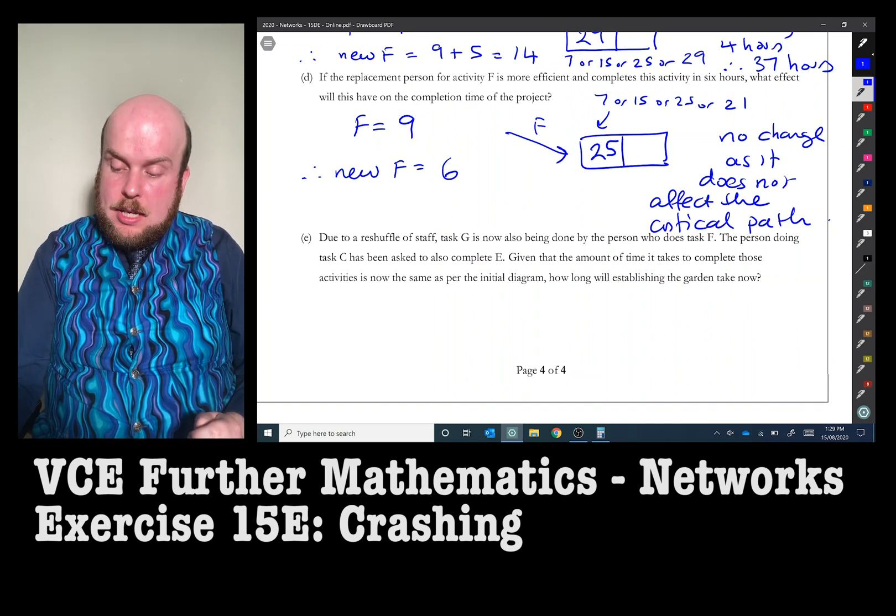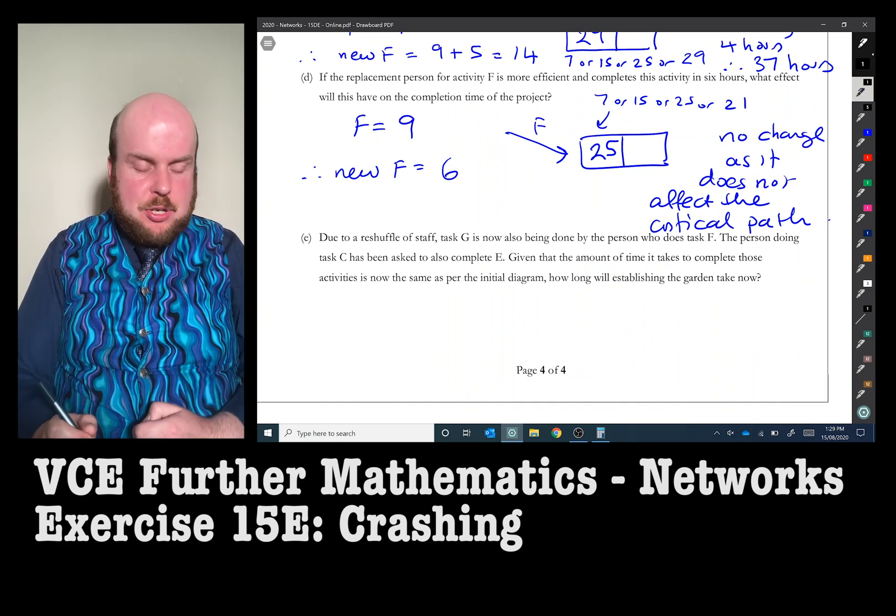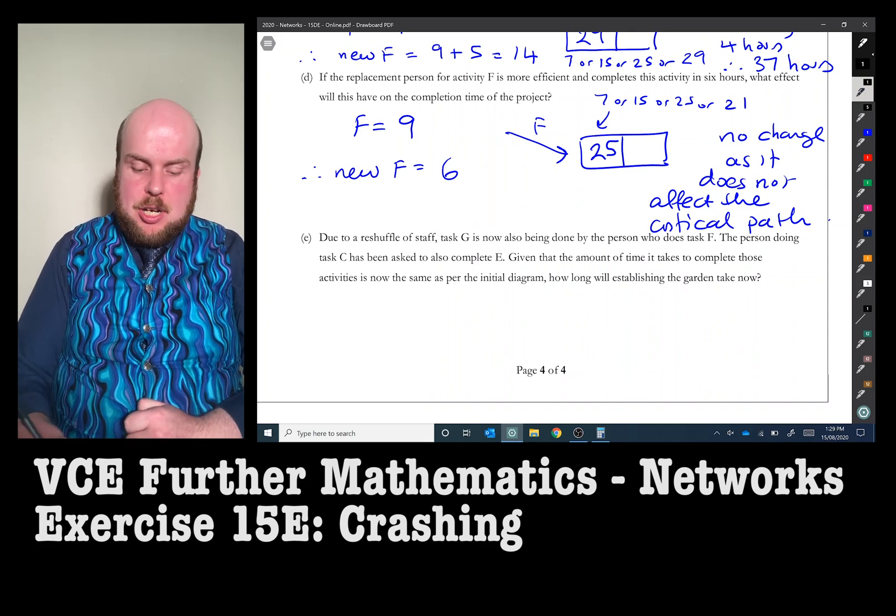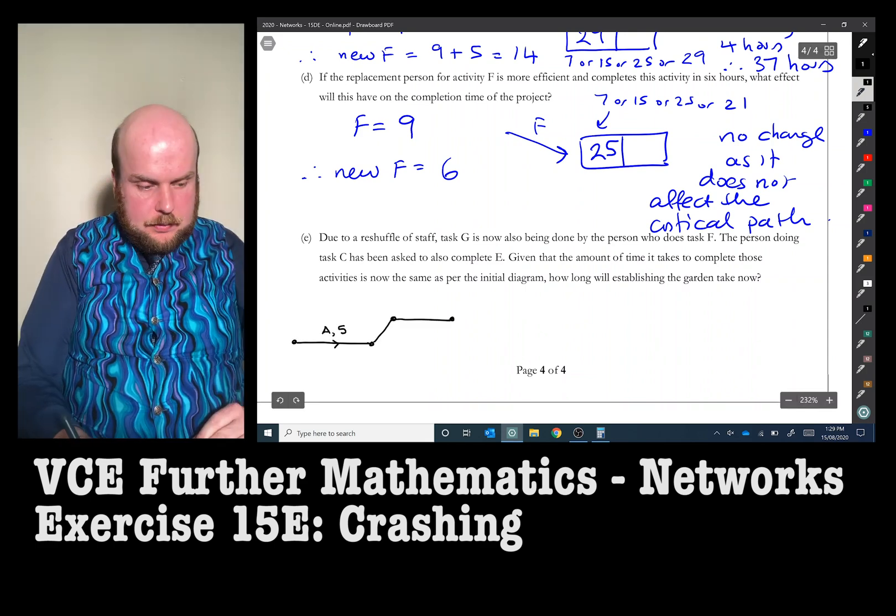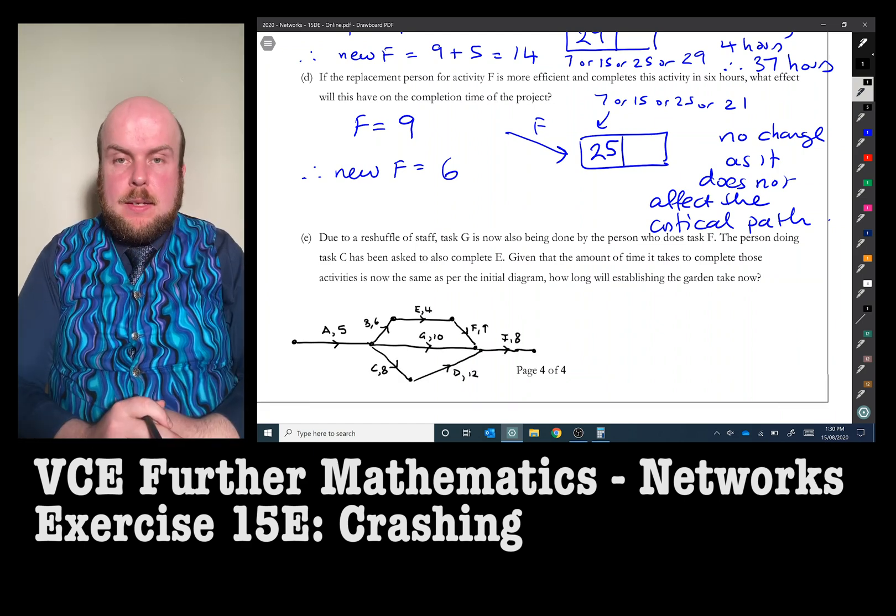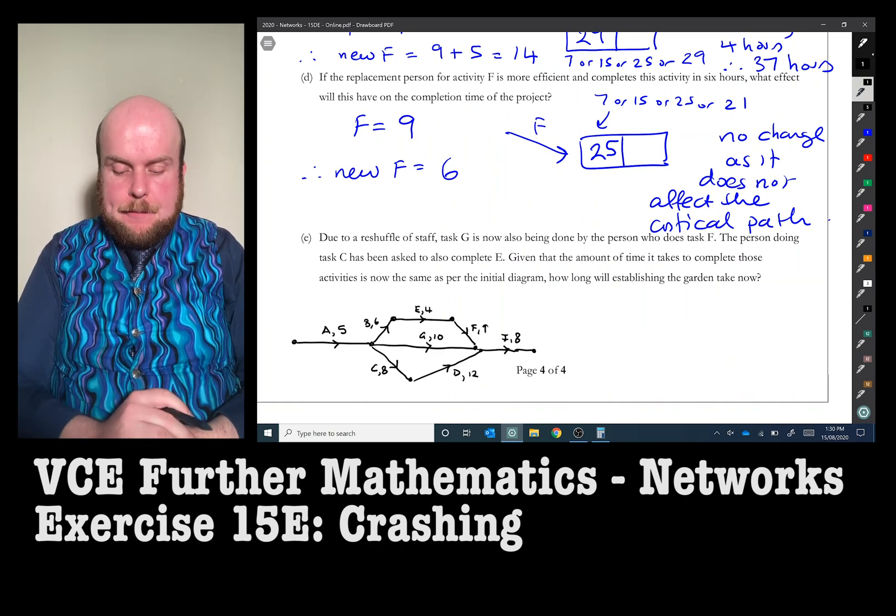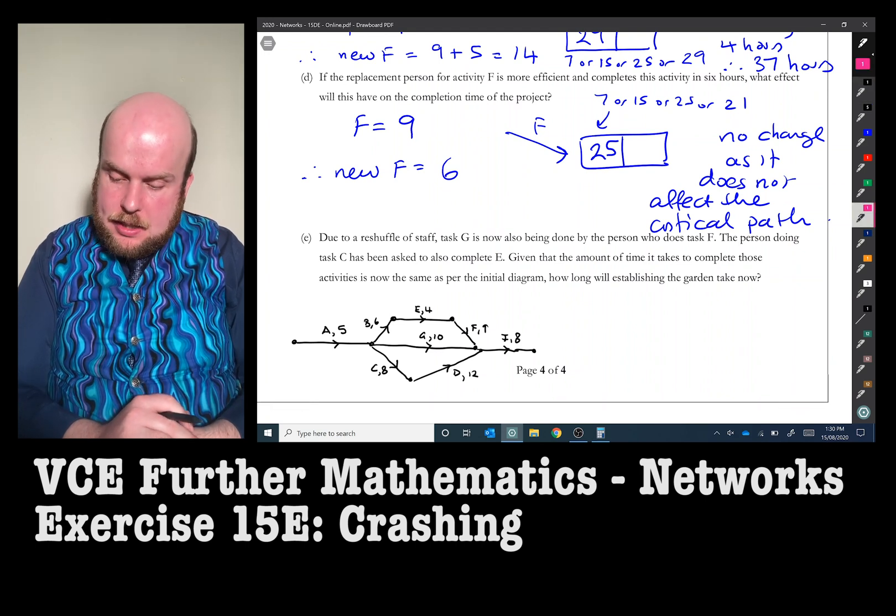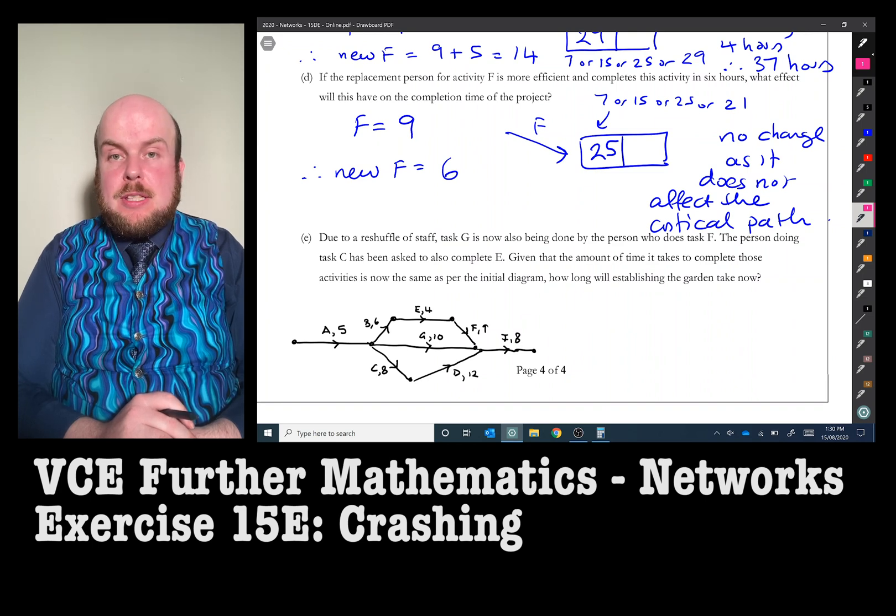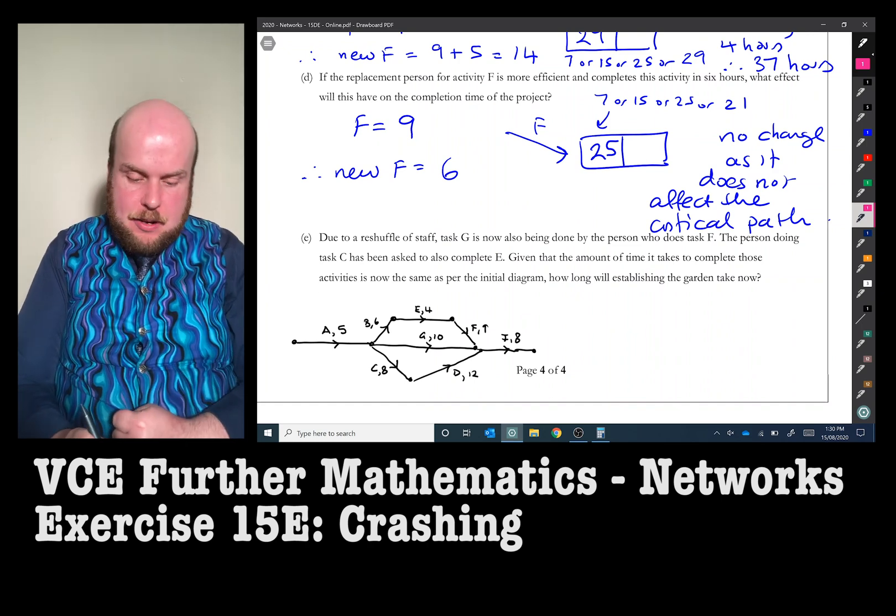So what I'm going to do is I'm going to redraw just that middle section of the network and show what will be changing. So that was just that middle section of the network, and what I'm going to do is I'm going to redraw it slightly. It says there that activity G is being done by the person who does activity F. So in other words, the predecessor to F will have to be G. So I'm going to bend it out of the network.